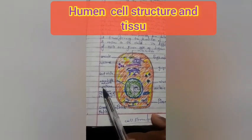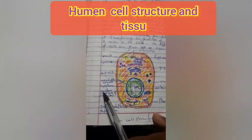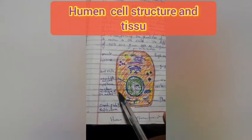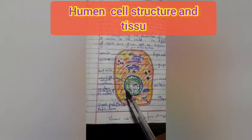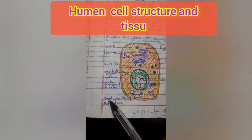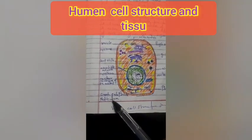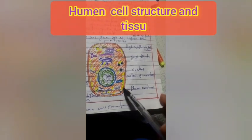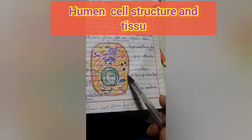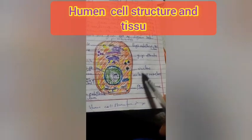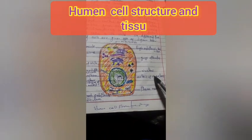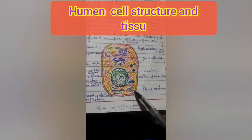Number 9: Cytoplasm. Number 10: Nuclear membrane of the nucleus. Number 11: Smooth endoplasmic reticulum. Number 12: Nucleus. Number 13: Nucleolus. Number 14: Plasma membrane.